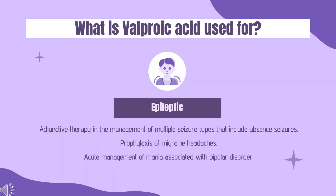What is valproic acid used for? 1. Monotherapy or adjunctive therapy in the management of complex partial seizures and simple or complex absence seizures. 2. Adjunctive therapy in the management of multiple seizure types that include absence seizures. 3. Prophylaxis of migraine headaches. 4. Acute management of mania associated with bipolar disorder.